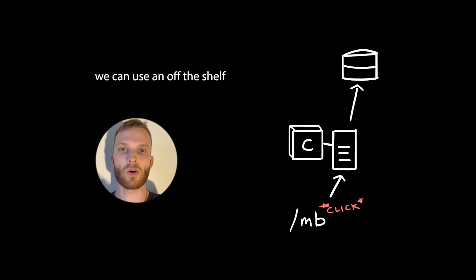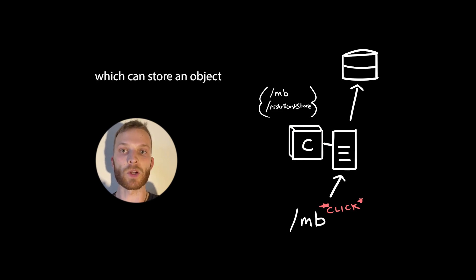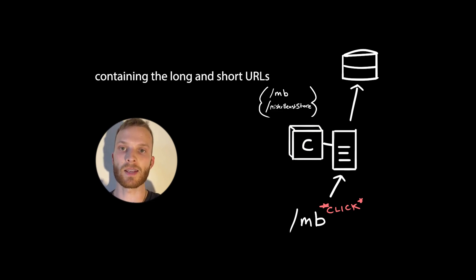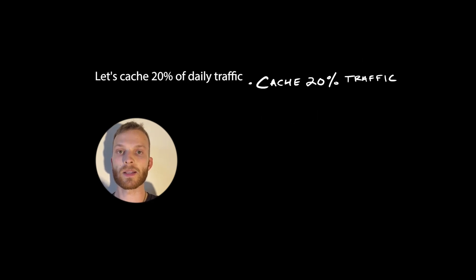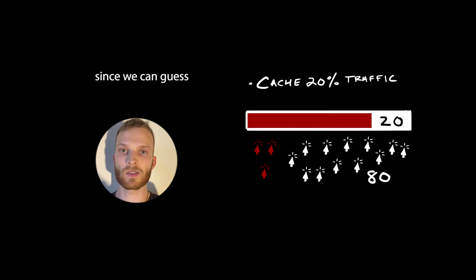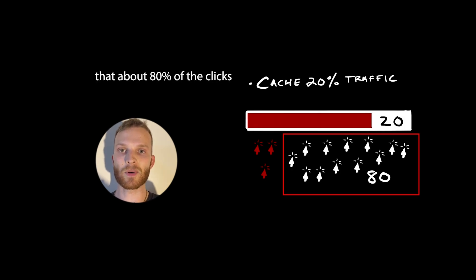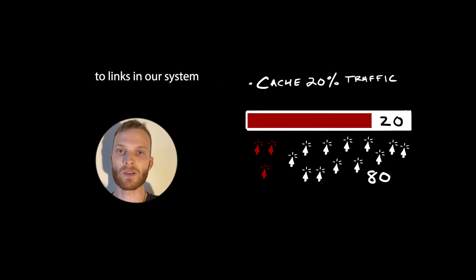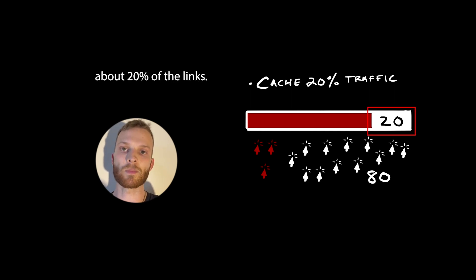We can use an off-the-shelf solution like Memcached, which can store an object containing the long and short URLs. Using the Pareto principle, let's cache 20% of daily traffic, since we can guess that about 80% of the clicks to links in our system will be clicks on about 20% of the links.